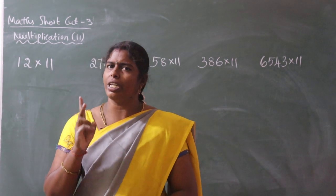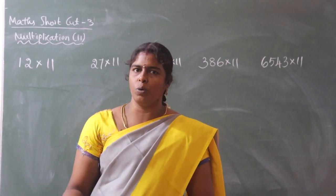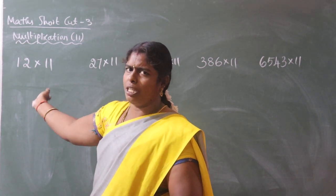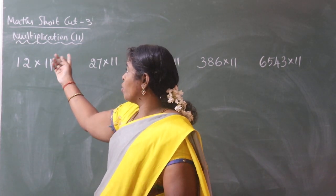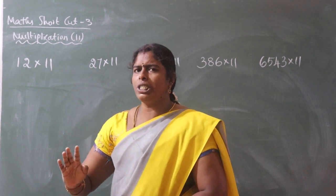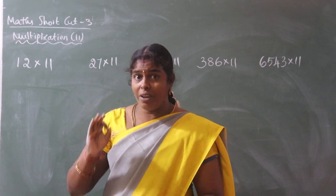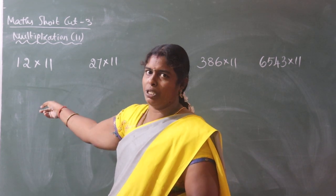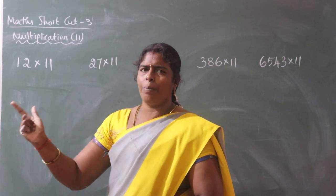First, we are going to talk about two videos — one-to-fifth students. In Shortcut 3, we are going to talk about two digits. If you have a number, you can do this Multiplication — you can do this in one step using a calculator shortcut.